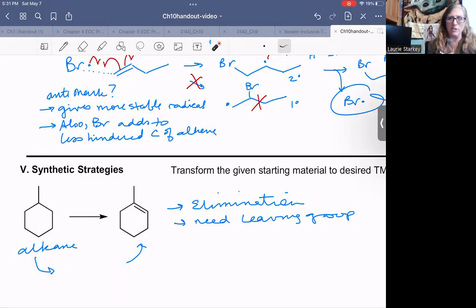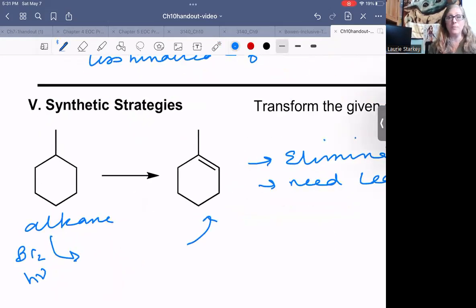So I could use free radical halogenation. Remember bromination is the one that is more selective. So if I did Br2 and light energy, h nu to represent light, Br2 and h nu, what would that do to methylcyclohexane? It would selectively, very selectively take this hydrogen atom and replace it with a bromine atom. So I can make an alkyl halide.